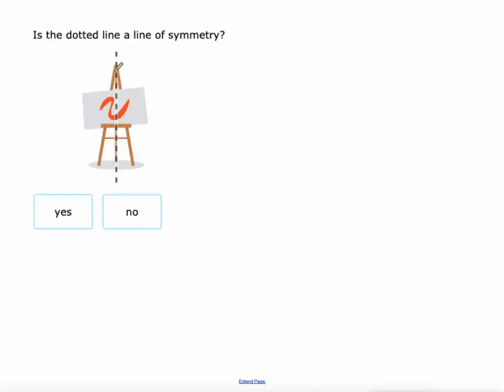This one's interesting because the easel that this artwork is sitting on is probably symmetric across that dotted line. But the actual artwork sitting on it is not. If we fold this over, it's not going to match. So that one's no.